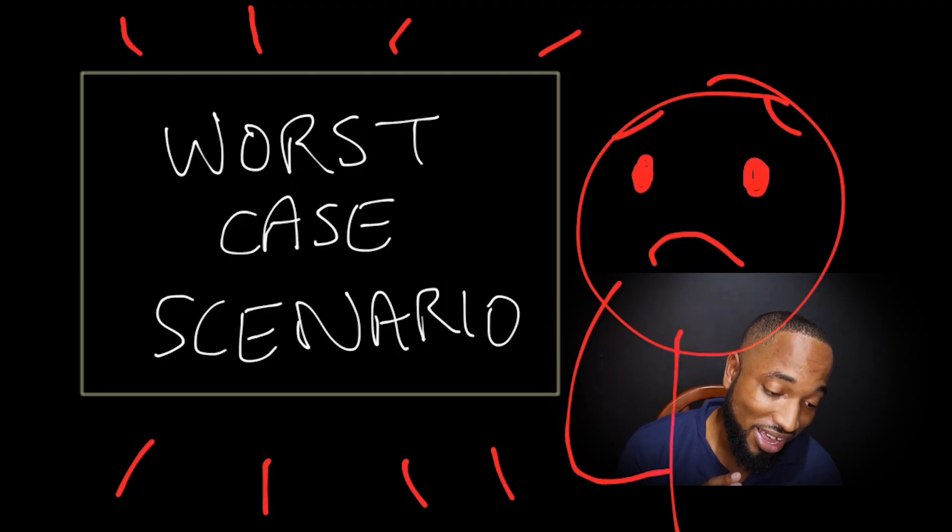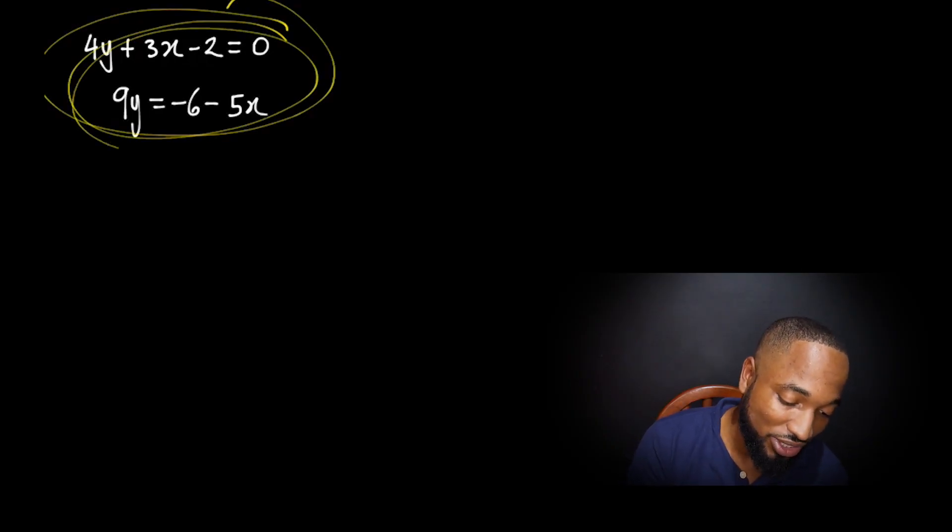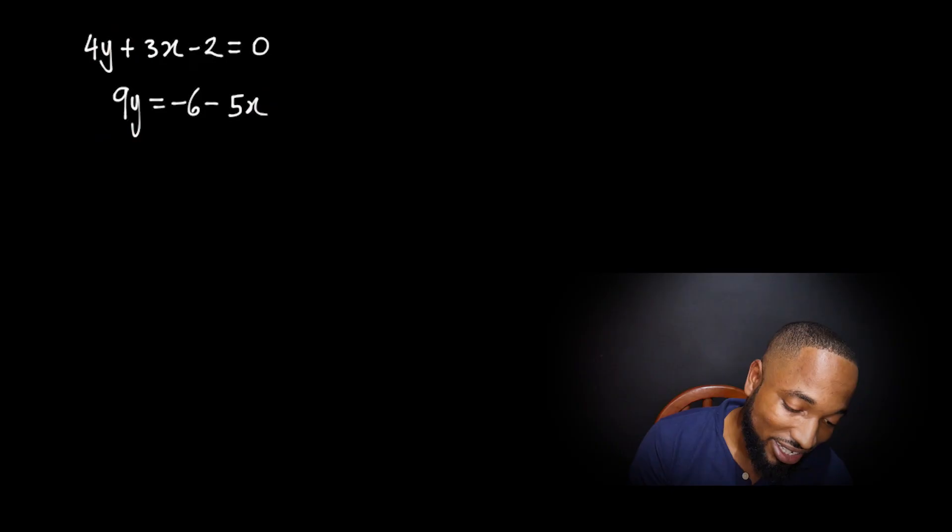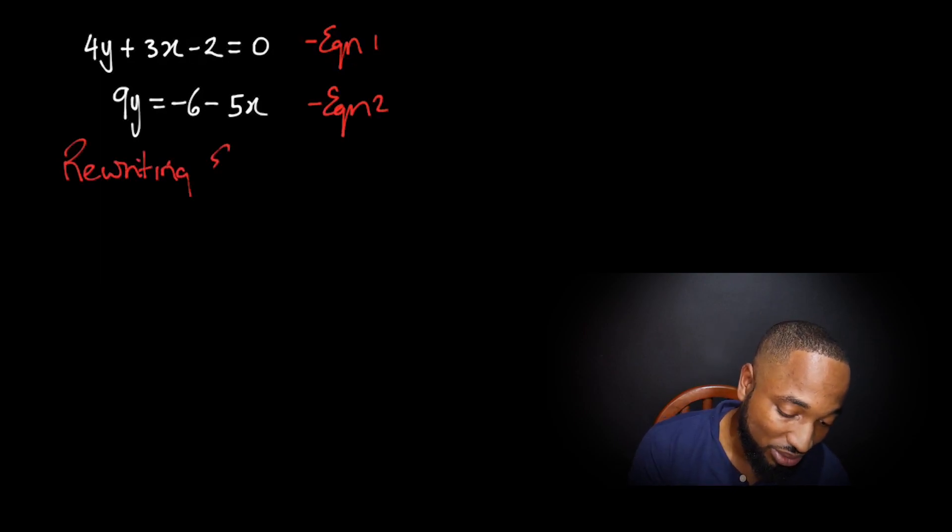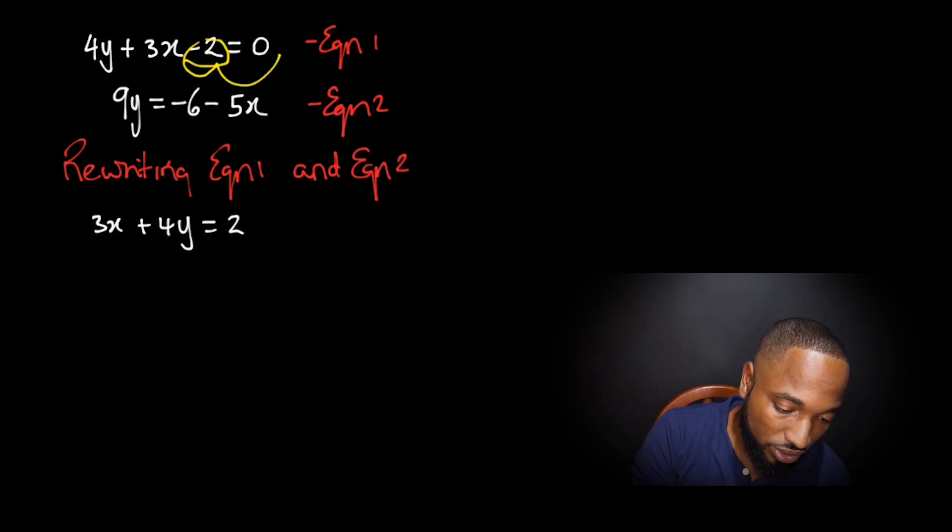I'm about to show you the worst case scenario and what could happen and what you'll do. In a worst case scenario you get some kind of weird looking equations like this, and you need to actually change them into a more applicable format. I'll just rearrange equation 1 and equation 2, rewrite them, and get them to look like the format that we are accustomed to. Your algebra manipulation skills have to be alright to be able to do this.